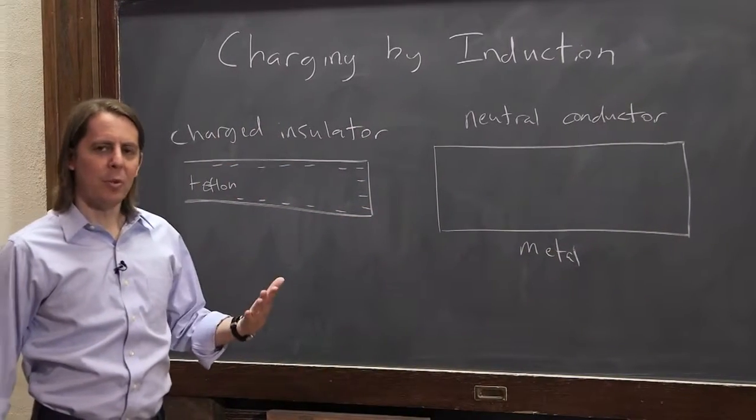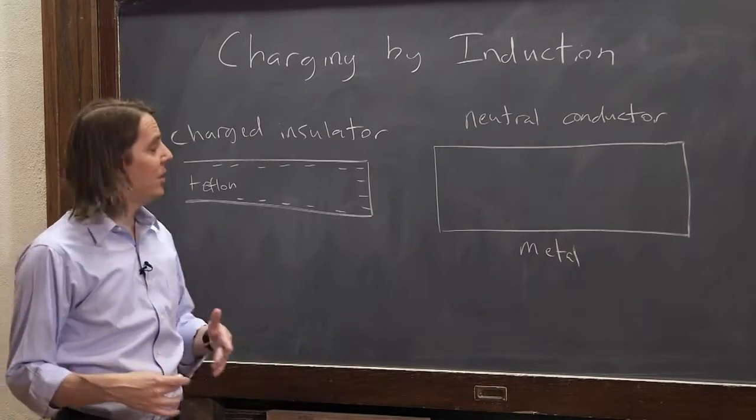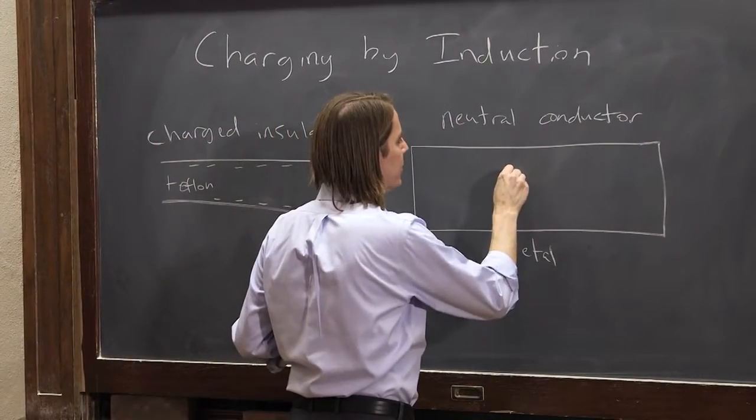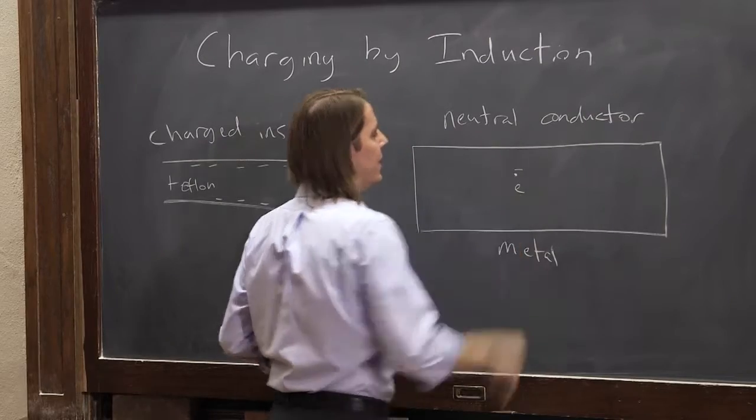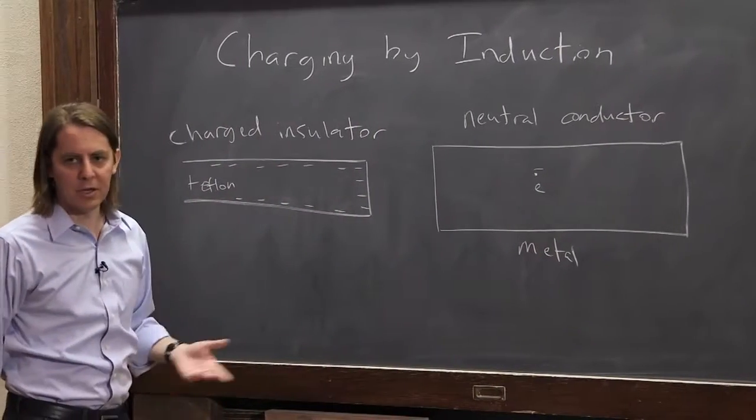So now, since it's a metal, we'll think microscopically what's happening inside. We know in this metal it's full of free electrons. So here's an electron with a negative charge, just sitting there minding its own business.